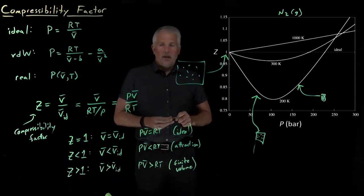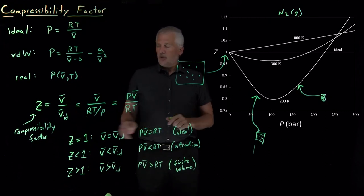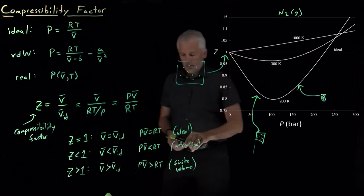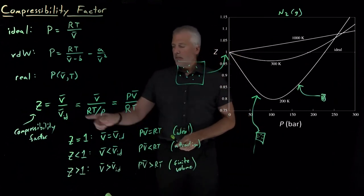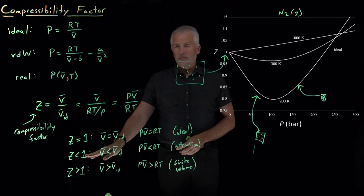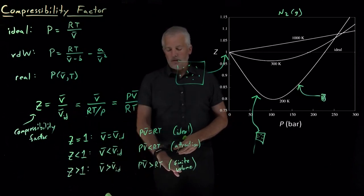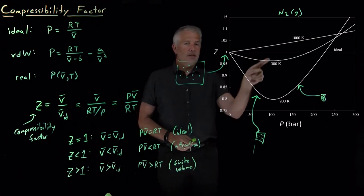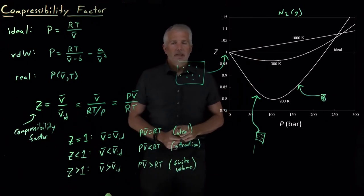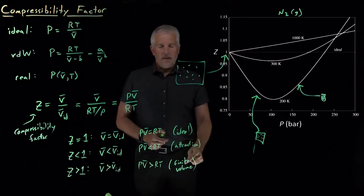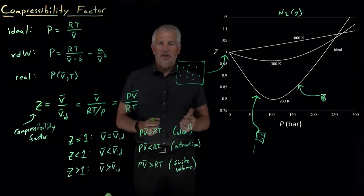That's an introduction to the compressibility factor. We've seen how it might be sometimes lower than one because of intermolecular interactions or higher than one from finite volumes, and we do see both behaviors in real gases. This brings up the interesting question of what happens when those deviations from ideality happen to exactly cancel one another—that's the topic of the next video lecture.